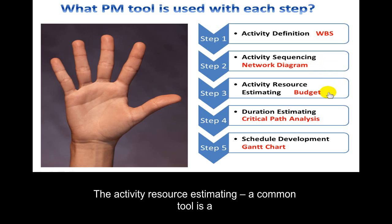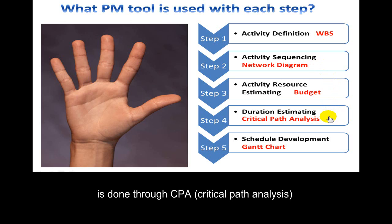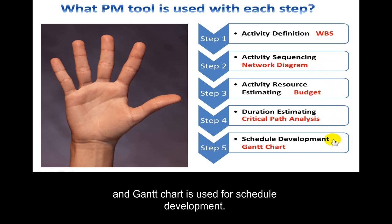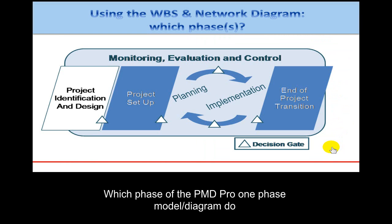For Activity Resource Estimating, a common tool is a budget. Duration Estimating is done through CPA, critical path analysis, and the Gantt chart is used for schedule development.